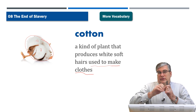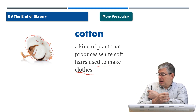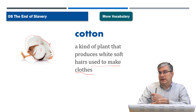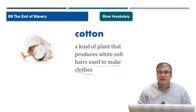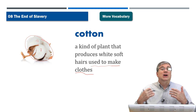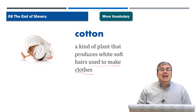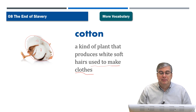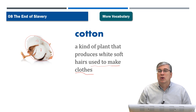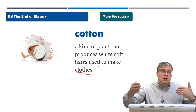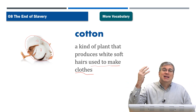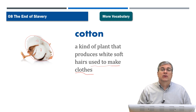Cotton was also pulled apart and used to make thread in clothes — a very important industry in the 1800s and still important today. It was usually grown in the southern states because they had a lot of wide open land and the climate was very warm, good for growing plants.